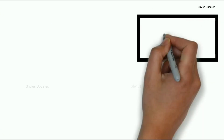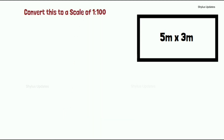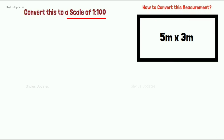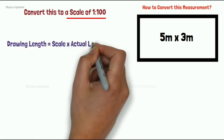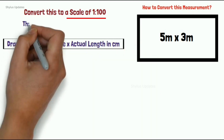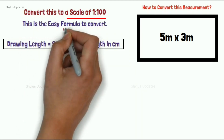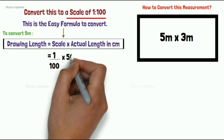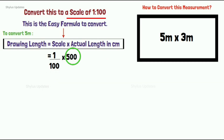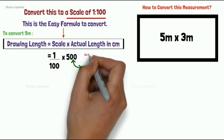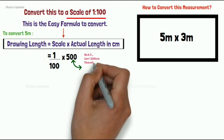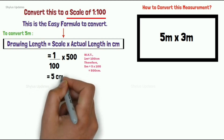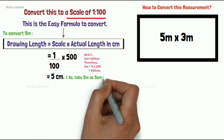If we have a plot of size 5 meters by 3 meters and the scale given is 1 to 100, how do we convert this measurement? To convert, use this simple formula: Drawing length = scale × actual length in centimeters. Substitute the values: scale is 1/100, and actual length is 5 meters. Convert 5 meters to centimeters — since 1 meter = 100 cm, 5 meters = 500 cm. So: (1/100) × 500 = 5 cm. Take 5 meters as 5 centimeters in the drawing.